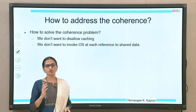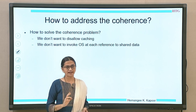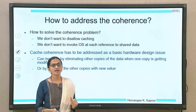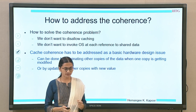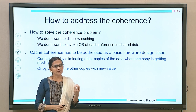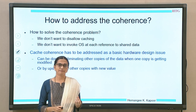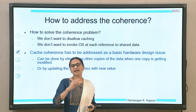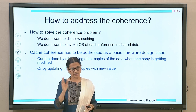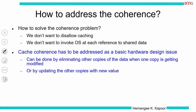Another solution is to invoke the operating system for such shared data items. However, we want to handle this inside hardware. If we want to do this in hardware, when a cache changes a data item, this change has to be informed to others — meaning either tell others to remove their copies, or give the new updated value to the other caches. So cache coherence addressed in hardware involves eliminating other copies or updating them with the latest value.